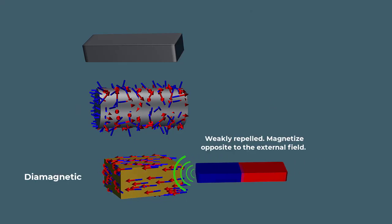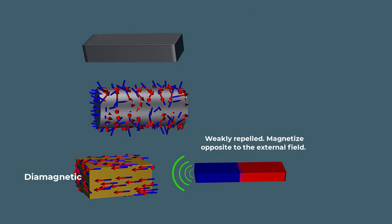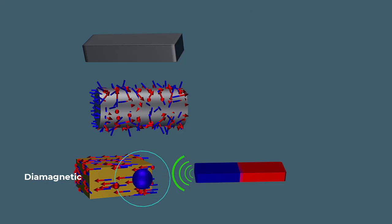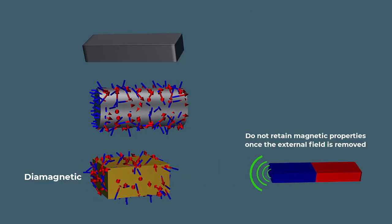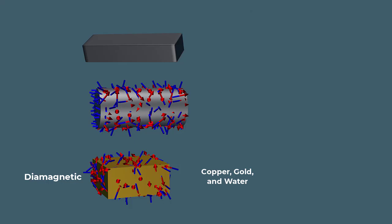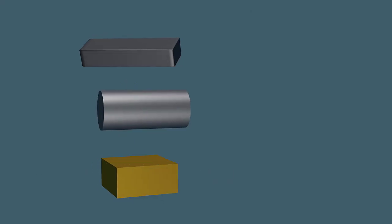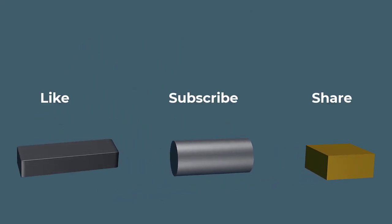Diamagnetic materials are weakly repelled by magnetic fields. This repulsion arises from the way electrons within their atoms respond to an external magnetic field. Diamagnetic materials do not retain magnetic properties once the external field is removed. Common examples include copper, gold, and water.